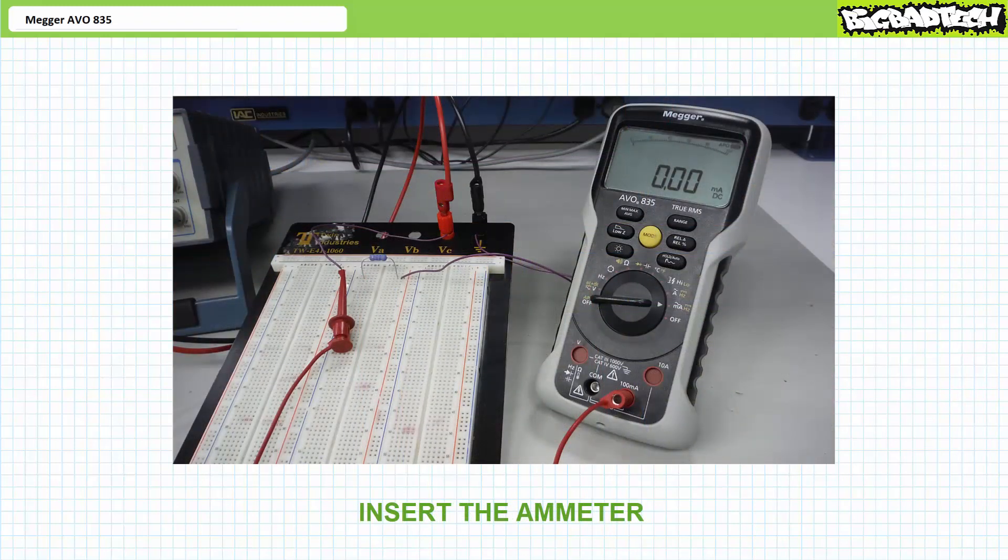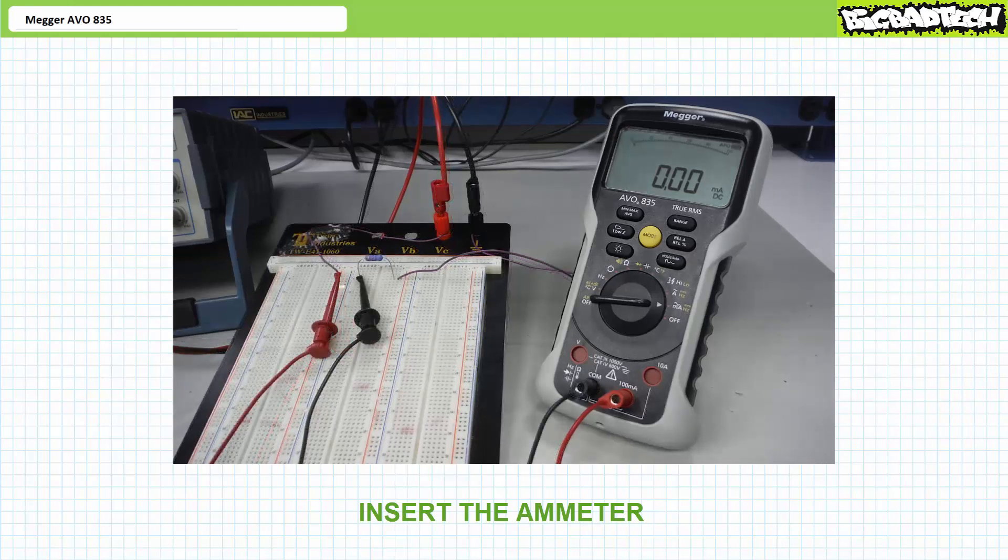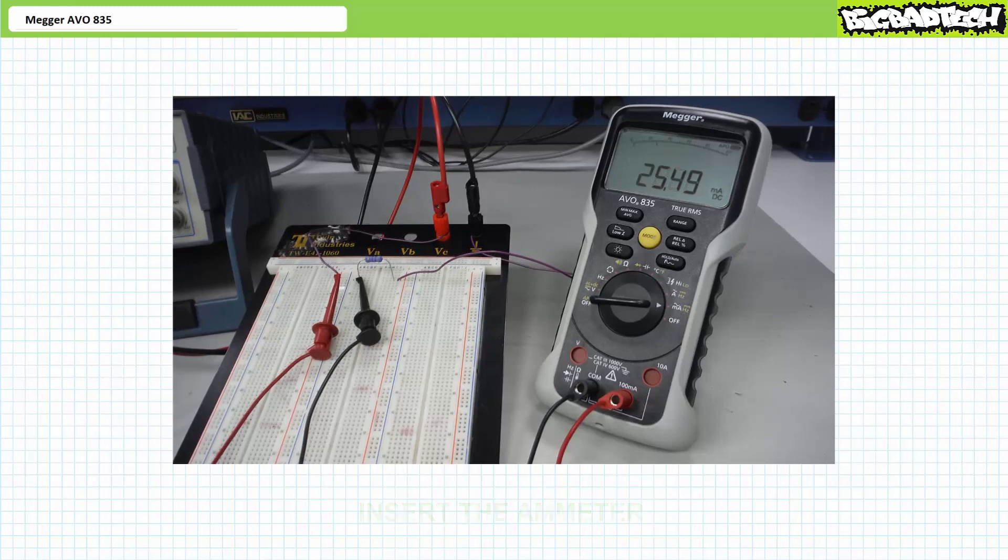Now we need to insert the ammeter. Out of the power supply positive terminal into the up to 100 milliamp ammeter in door, through the ammeter, out of the ammeter out door, into the resistor. Power on the power supply.